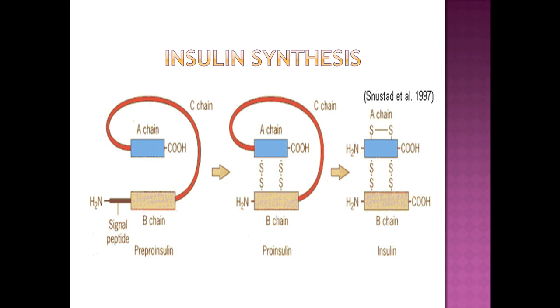Insulin synthesis. Insulin is the hormone which regulates blood glucose levels. It is synthesized in significant quantities only in beta cells found in the pancreas. The insulin mRNA is translated as a single chain precursor called pre-proinsulin.